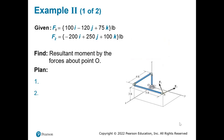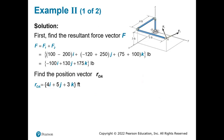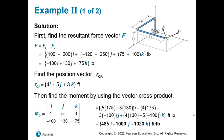For the vector approach example with forces F1 and F2: first find the resultant of F1 and F2, then find the position vector from O to A — which gives coordinates 4, 5. Set up the determinant with i, j, k in the first row, position vector components in the second, and resultant force components in the third. Compute each component carefully. Try solving it yourself to become comfortable with the method.